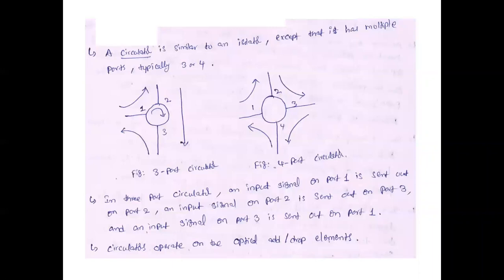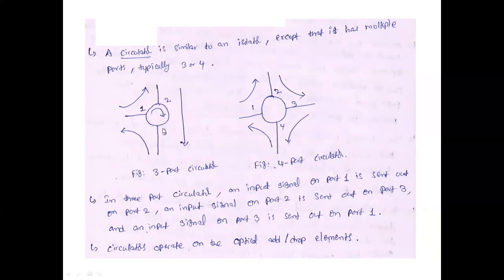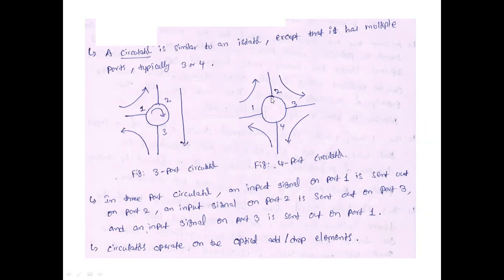The next component is the circulator. The name itself indicates that the signal is transmitted in a circular fashion. There are two types of circulators based on ports: three-port and four-port. In a three-port circulator, input at port 1 gives output at port 2; input at port 2 gives output at port 3; input at port 3 gives output at port 1 — in a circular fashion. In a four-port circulator, input at port 1 gives output at port 2; input at port 2 gives output at port 3; input at port 3 gives output at port 4; input at port 4 gives output at port 1.